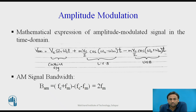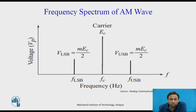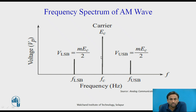From the mathematical expression we conclude that an AM signal consists of a carrier signal, LSB, and USB. To represent the AM signal in the frequency spectrum, frequency is on the x-axis and voltage on the y-axis. As shown, F_LSB and F_USB represent the lower and upper sideband frequencies, and the amplitude of each sideband is m·Ec/2, where Ec is the amplitude of the carrier signal.